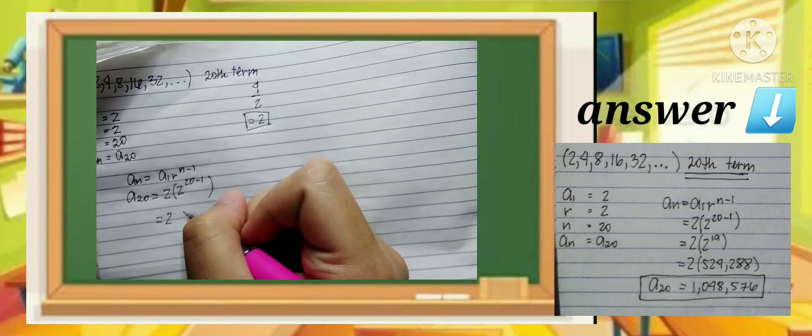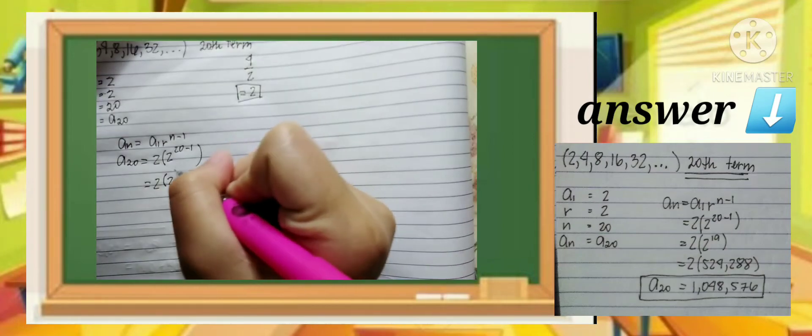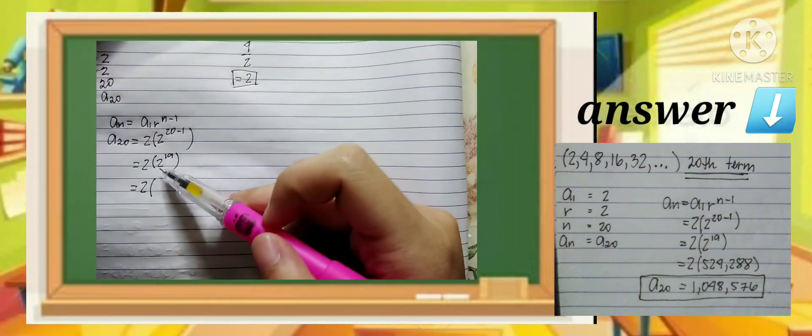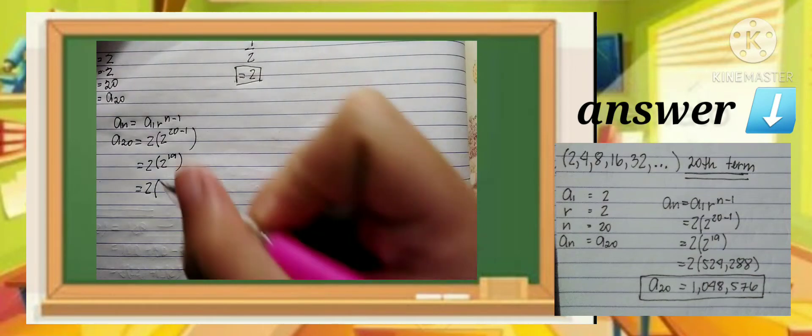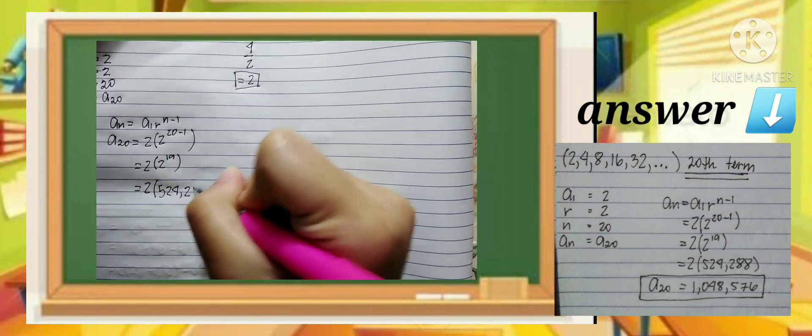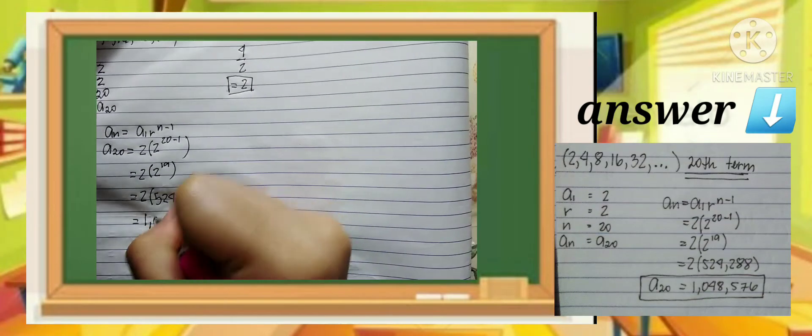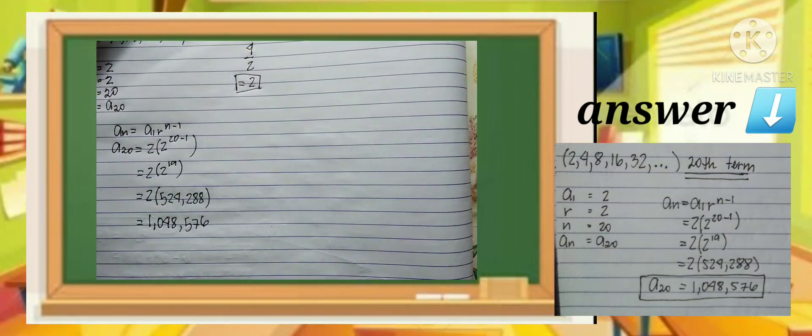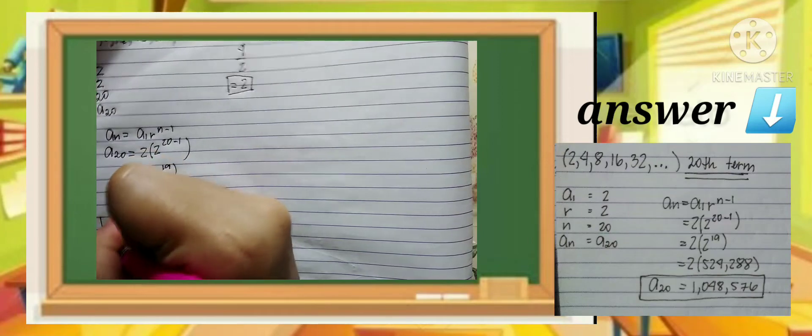So 2, and 20 minus 1 equals 19. So 2 times itself 19 times. The total is 524,288. Now multiply that by 2 to get the answer: 1,048,576. That's the 20th term.